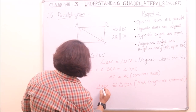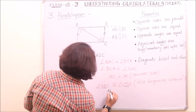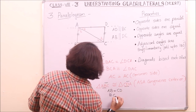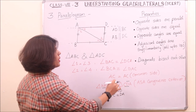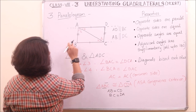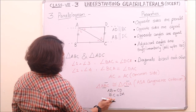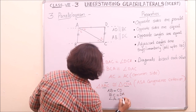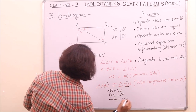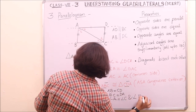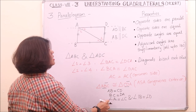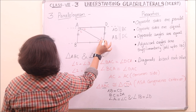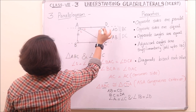Since the two triangles are congruent, the corresponding parts are also congruent. So we can say AB equals CD, and BC equals DA — this proves the second property. Also, we can say angle A equals angle C, and angle B equals angle D. So we have proved the third property: opposite angles are equal.